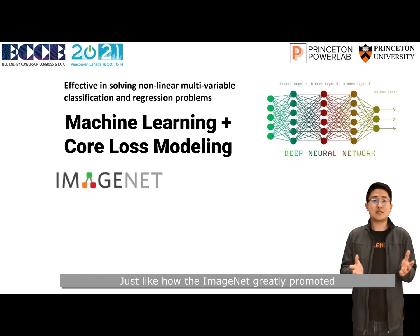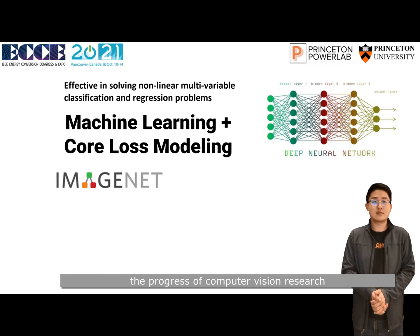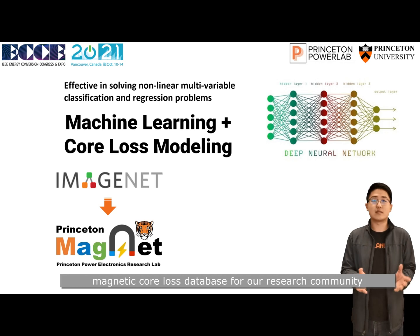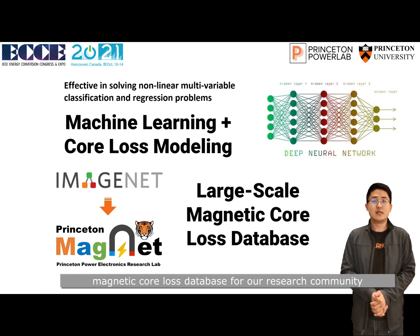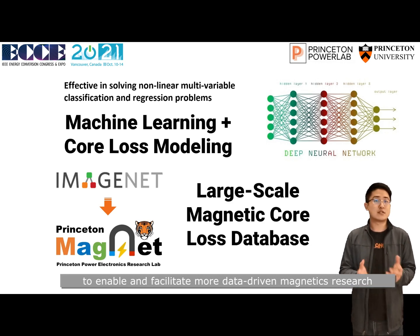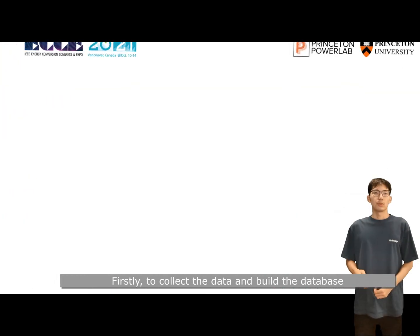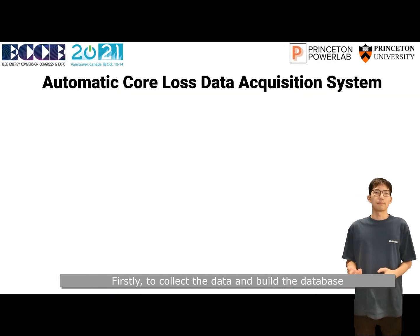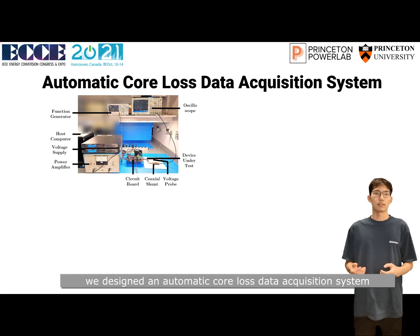Just like how ImageNet greatly promoted the progress of computer vision research, we anticipate that building an open-source magnetic core loss database will enable and facilitate more data-driven magnetic research. To collect the data and build the database, we designed an automatic core loss data acquisition system.